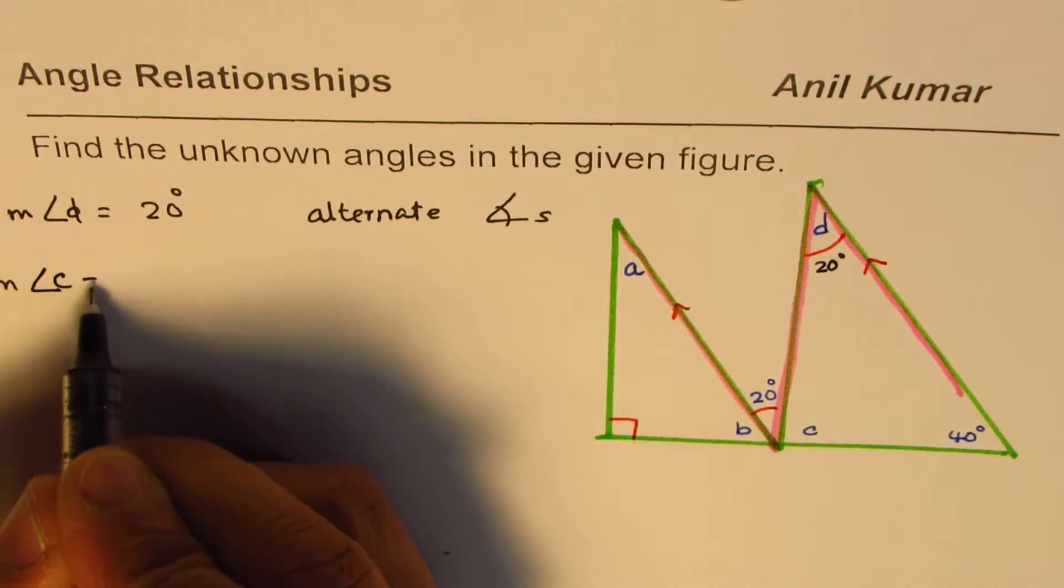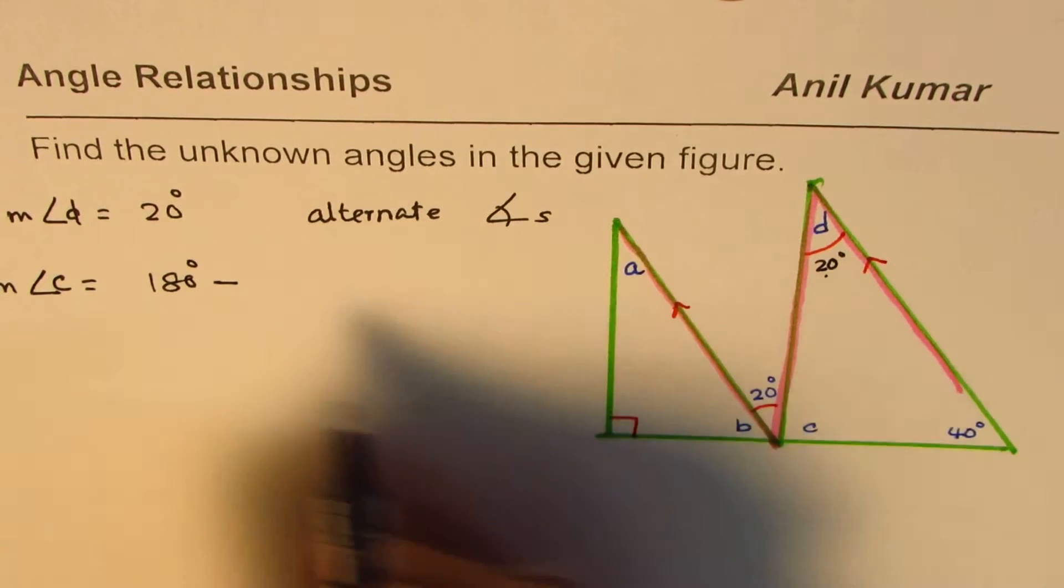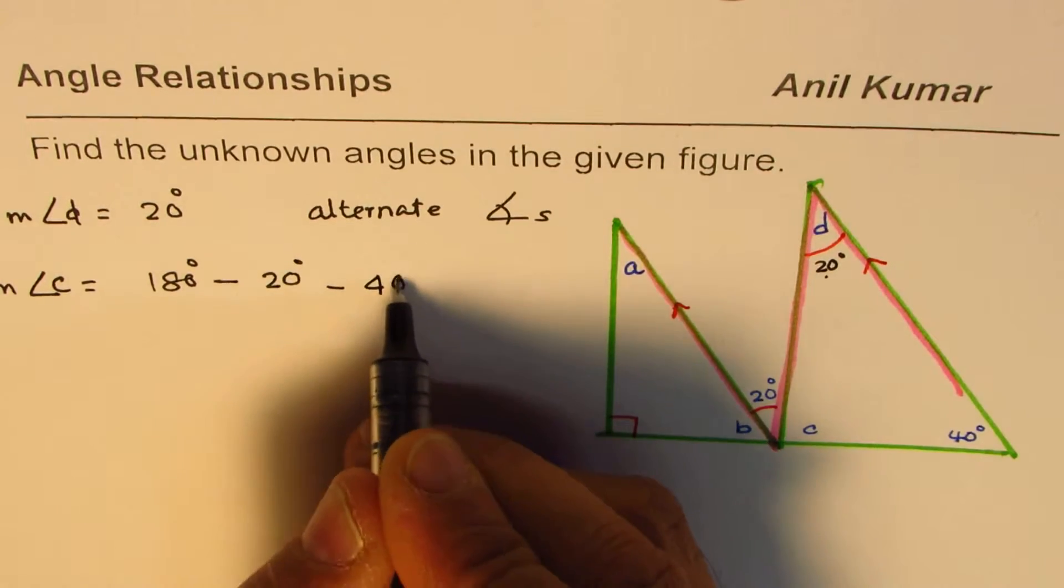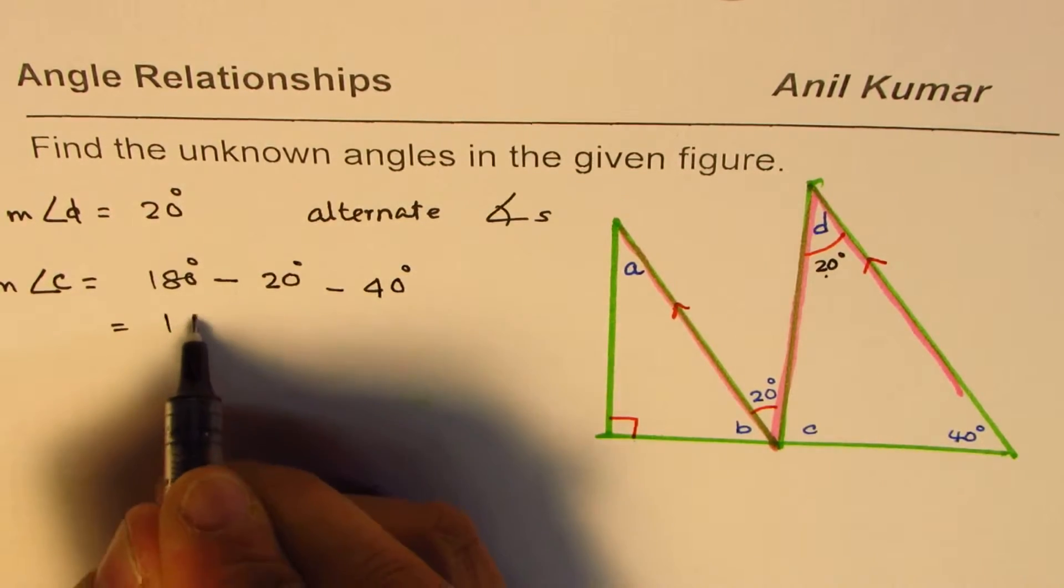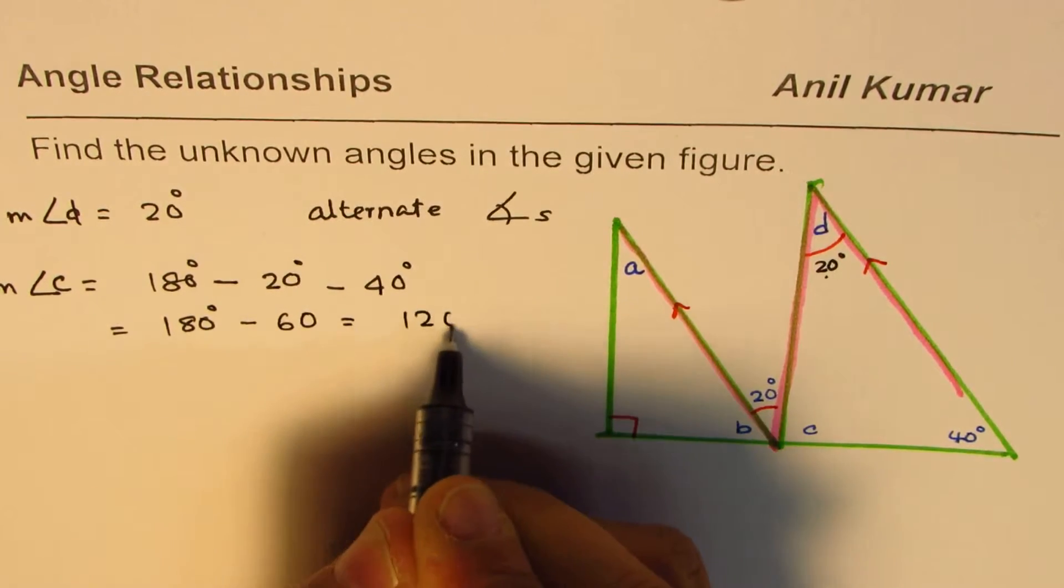The measurement of angle C equals 180 degrees, take away 20 degrees and 40 degrees, which is the other angle. So it is 180 degrees take away 60. That gives you 120 degrees.